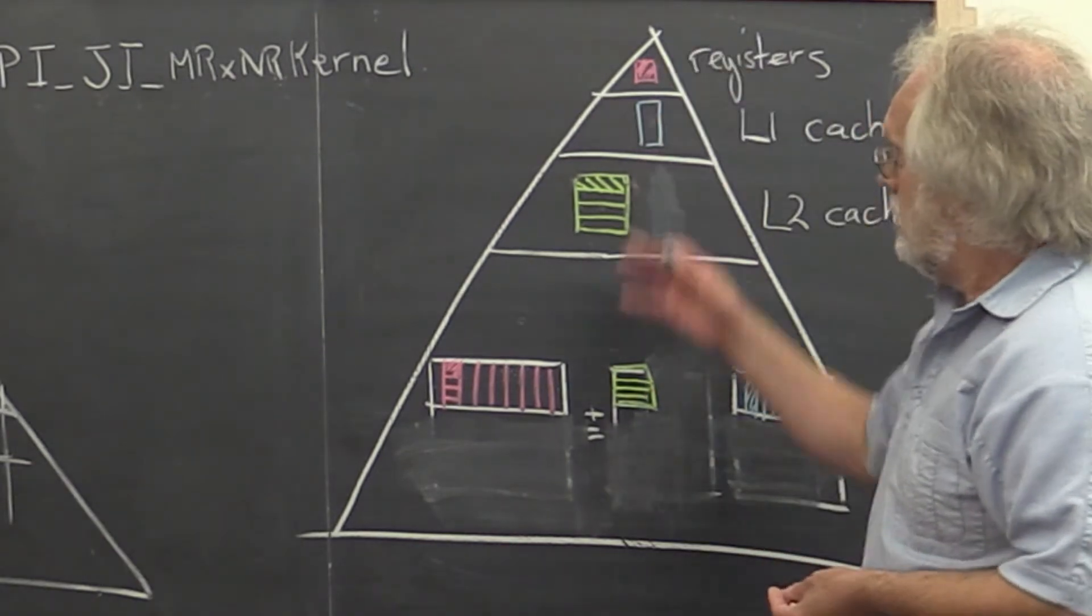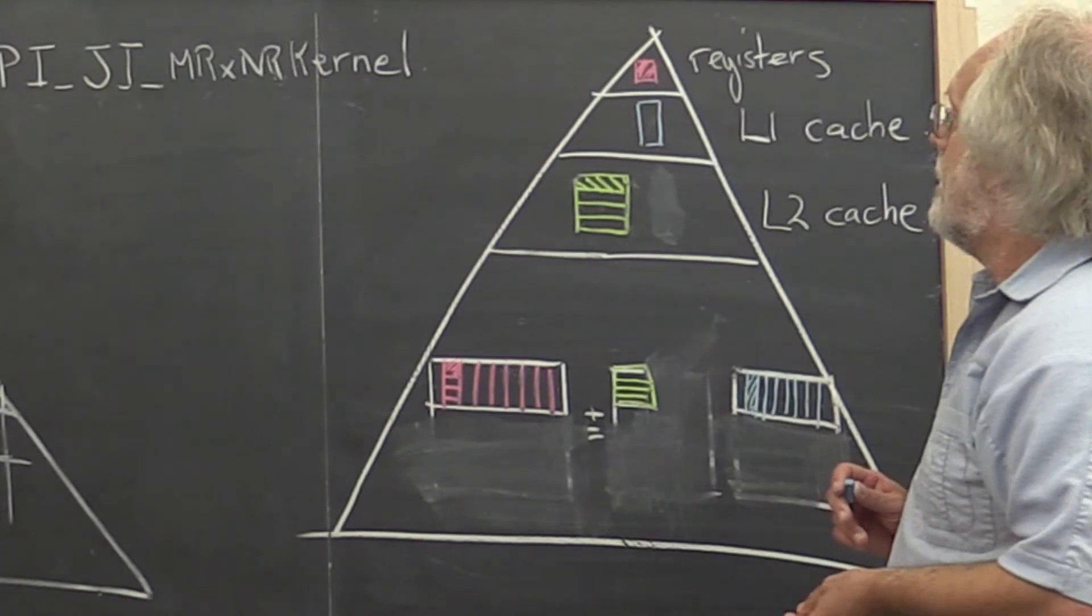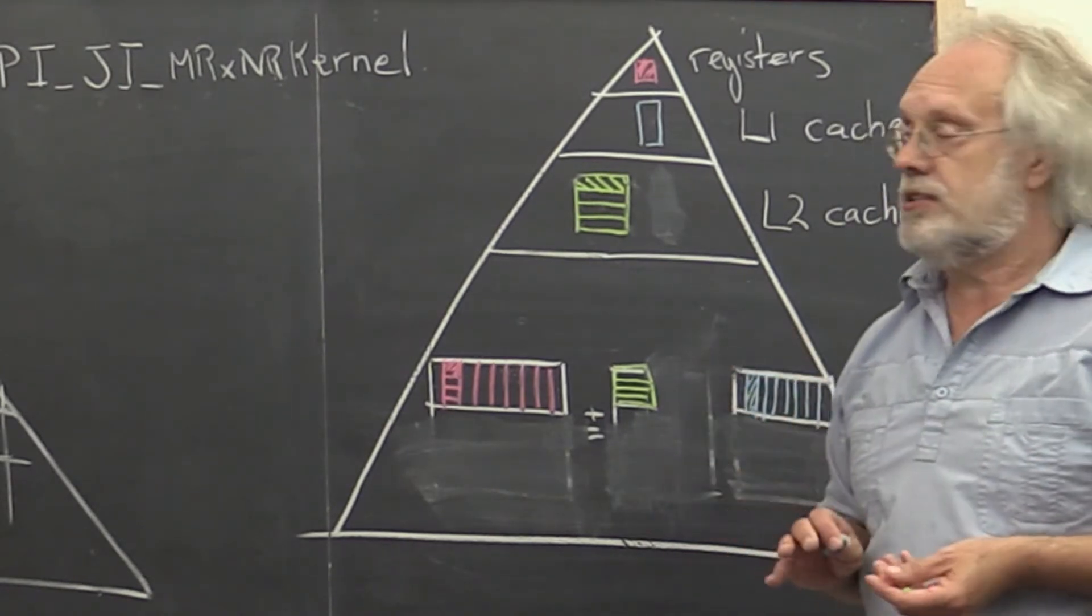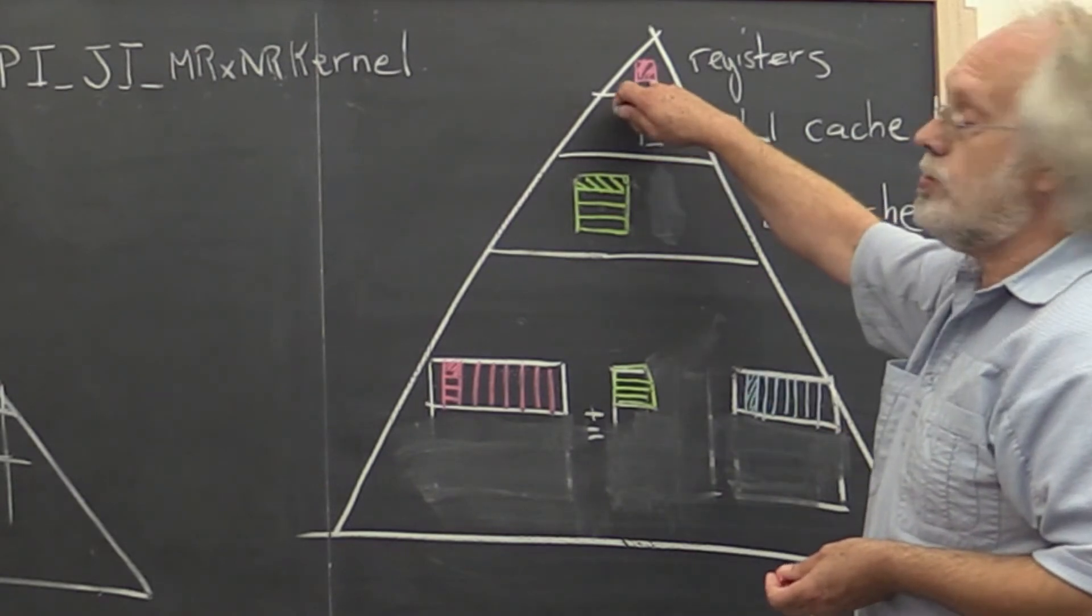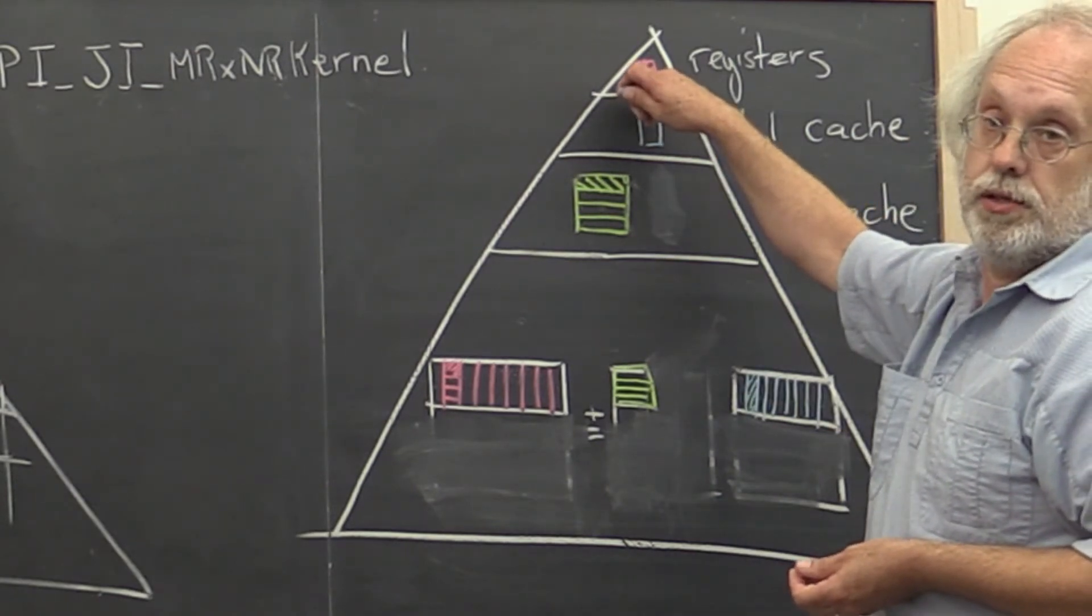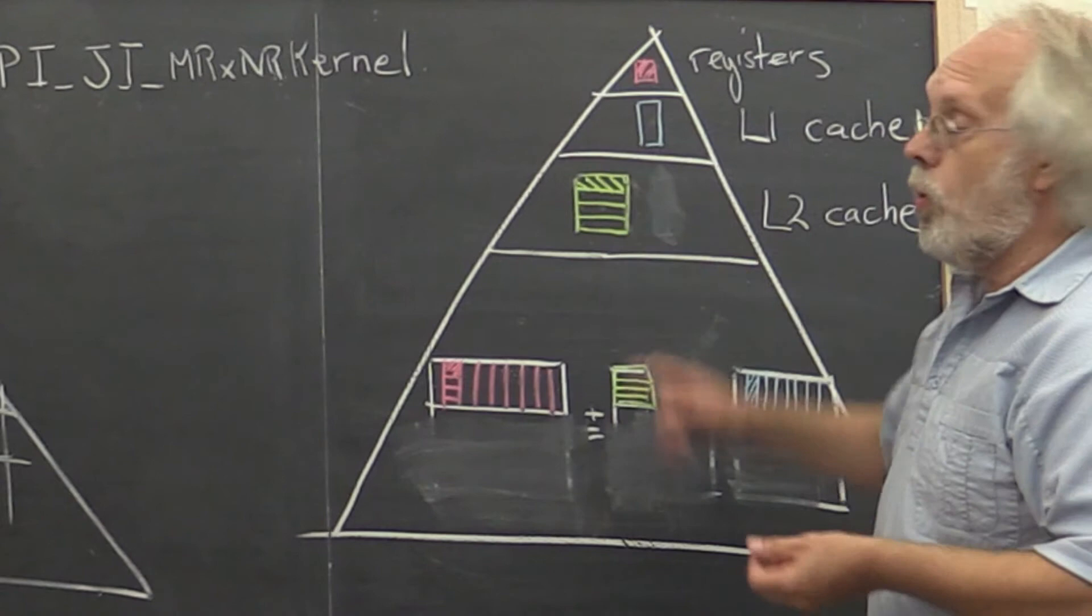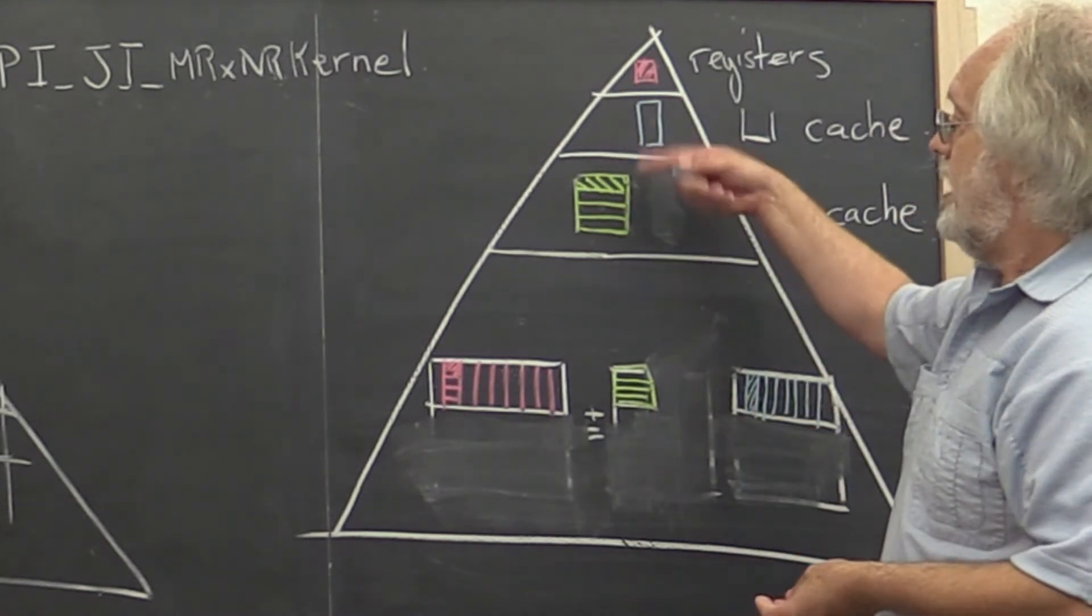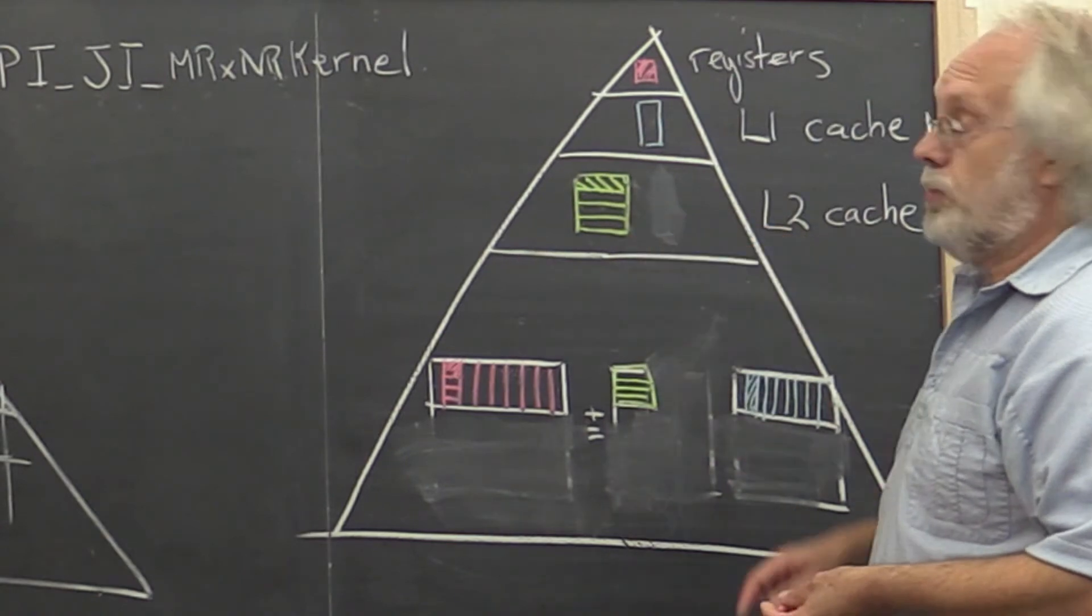And I reiterate that we can explicitly control what goes into registers. But it really is the ordering of the loops and the reuse of the data that keeps data in the L1, L2 cache.